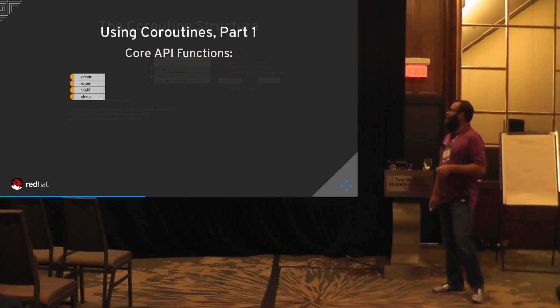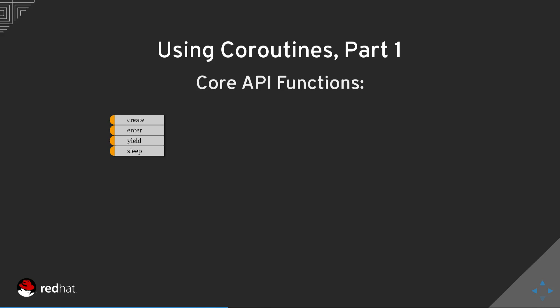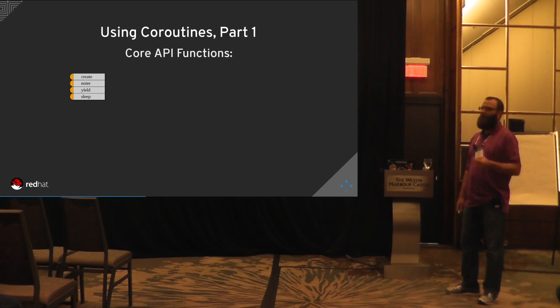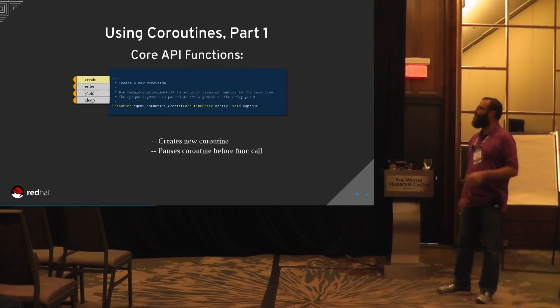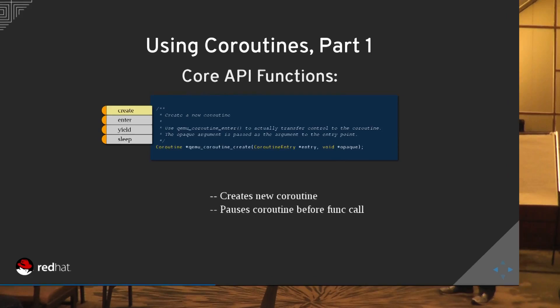Looking at the core API functions: we have a way to create coroutines, to enter coroutines, to yield coroutines, and sleep. The create function creates a new coroutine and pauses before the function call, as discussed. These prototypes are pulled from the header file and are available in the QEMU include directory.